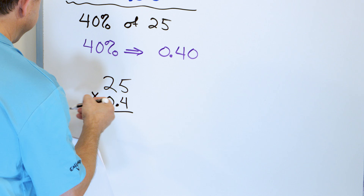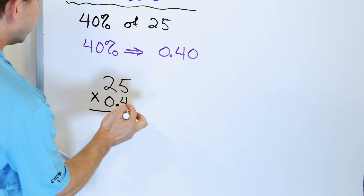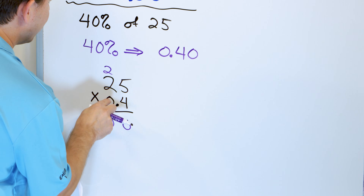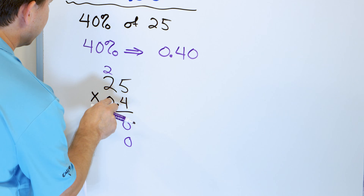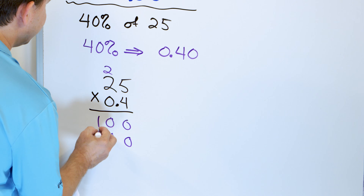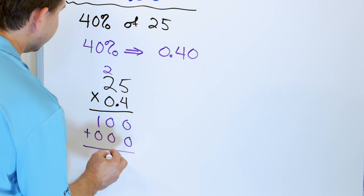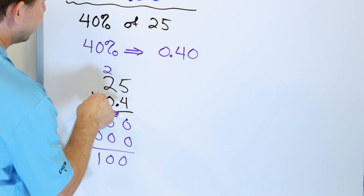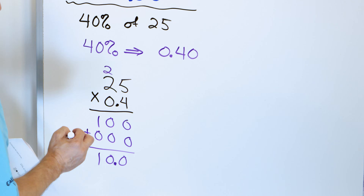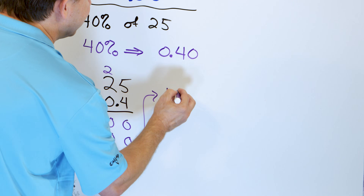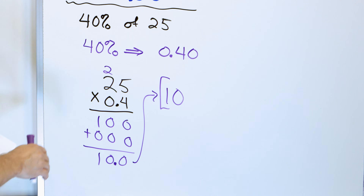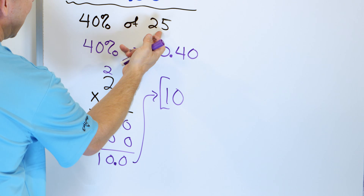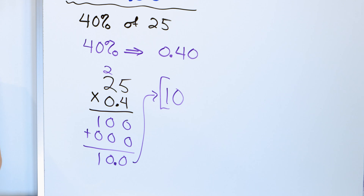5 times 4 is 20, carry the 2. 2 times 4 is 8, 9, 10. Drop a 0, then 0 times 5 is 0, 0 times 2 is 0. So we have 1, 0, 0. There's one position after the decimal in the entire problem, so one position after the decimal in my answer — 10.0, which is the same thing as 10. That's the final answer. So 40% of 25 is 10, which is a little bit less than half — half would be 12.5.